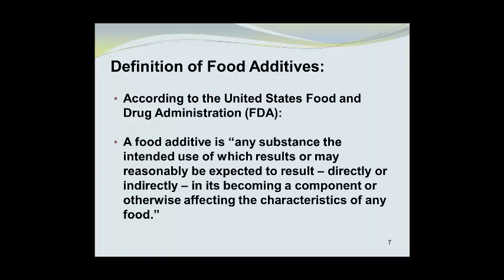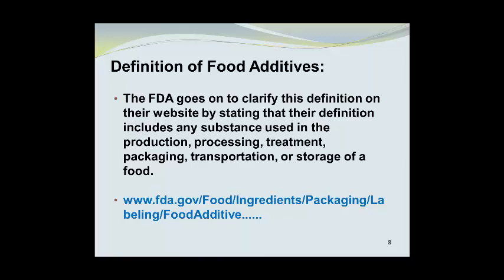Any substance, the intended use of which results or may reasonably be expected to result, directly or indirectly, in its becoming a component or otherwise affecting the characteristics of any food. The FDA goes on to clarify this definition on their website by stating that their definition includes any substance used in the production, processing, treatment, packaging, transportation, or storage of a food product.